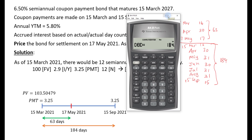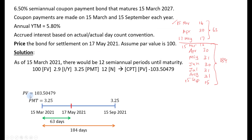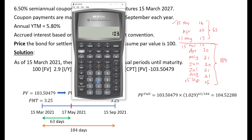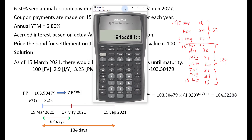Now we compound the present value of the bond from 15 March 2021 to 17 May 2021: 103.50479 × (1.029)^(63/184) = 104.52288. This is the full price, or dirty price, or invoice price of the bond on 17 May 2021 — the price the buyer pays the seller, which includes the accrued interest from 15 March to 17 May 2021.